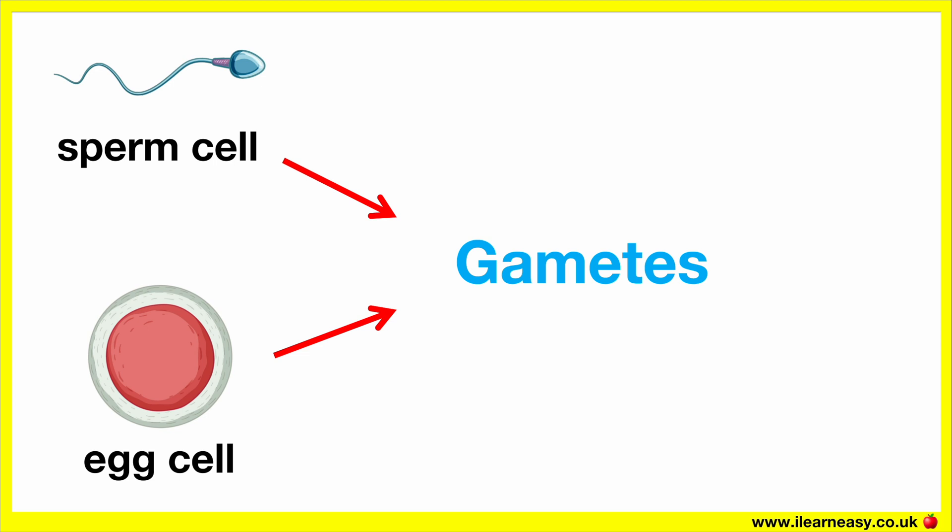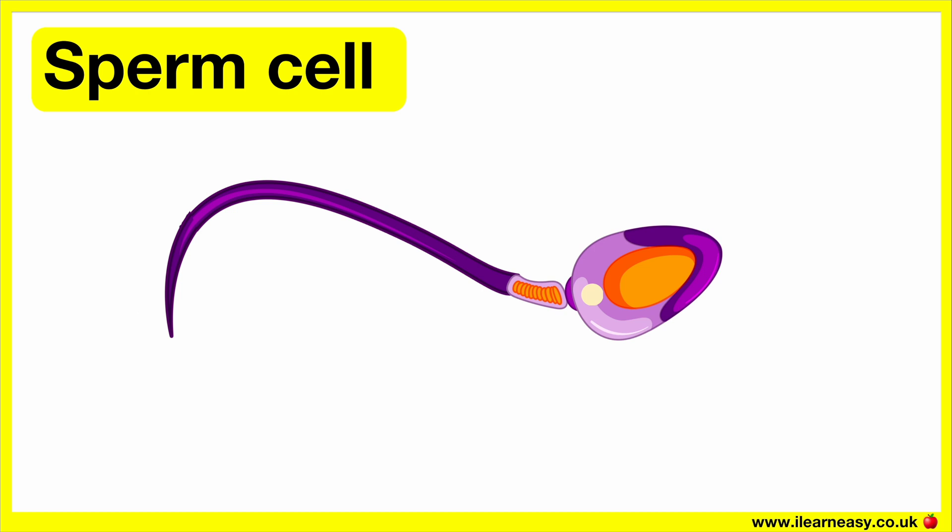Sperm are male gametes. Eggs are female gametes. Gametes have adaptations which increase the chances of fertilisation and ultimately successful development of an embryo.